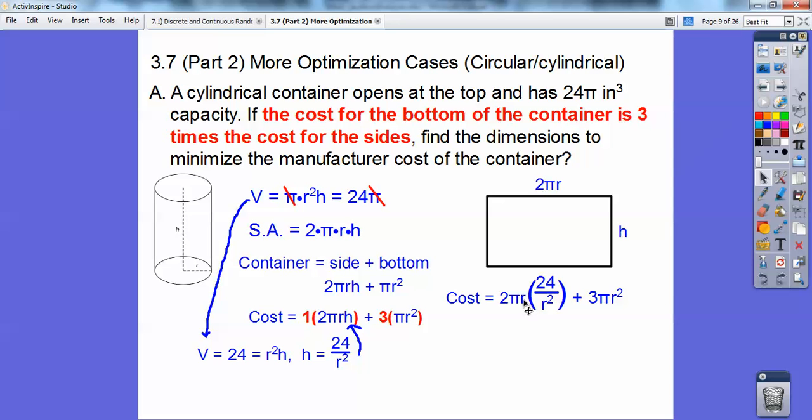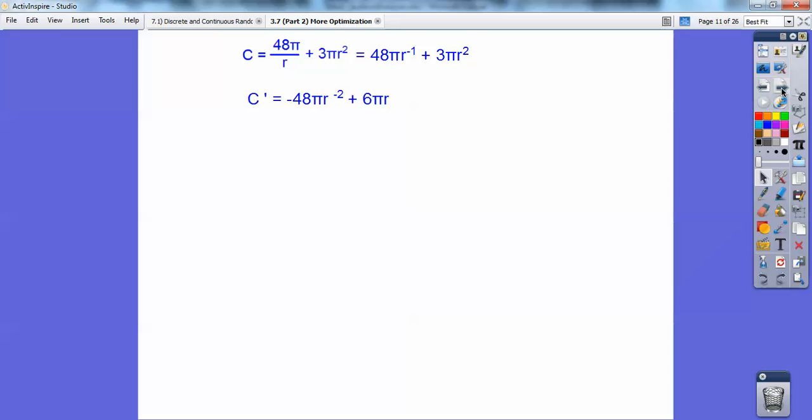I'm going to cancel that r with one of those. Before I take the derivative, I'm going to make this 48πr⁻¹, and I did that right here. So 48πr⁻¹ plus 3πr². The derivative of this cost formula becomes this right here.